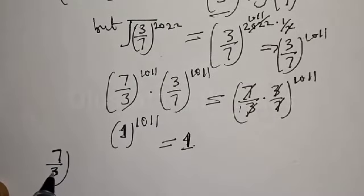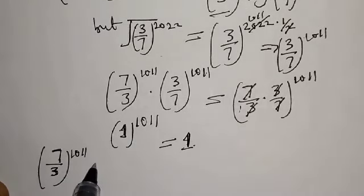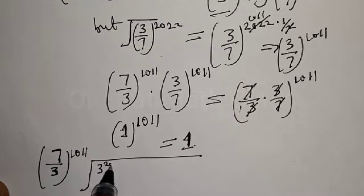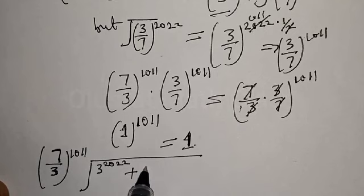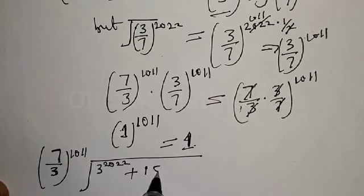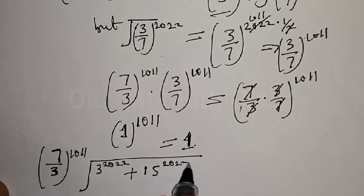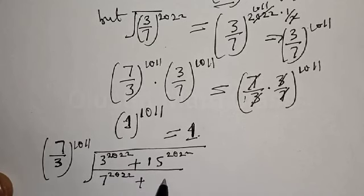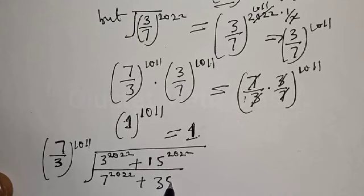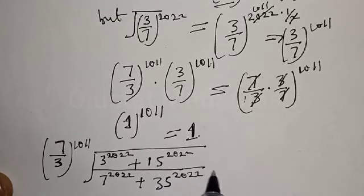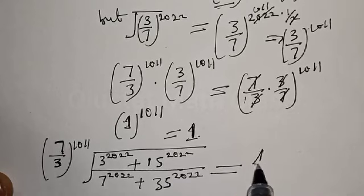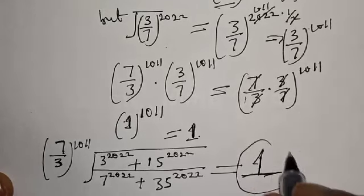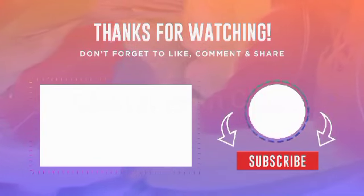Therefore, 7 over 3 raised to power 1011 multiplied by the square root of 3 raised to power 2022 plus 15 raised to power 2022, over 7 raised to power 2022 plus 35 raised to power 2022, is equal to 1. That is our answer. Please don't forget to like, share, comment, and subscribe. Thank you.